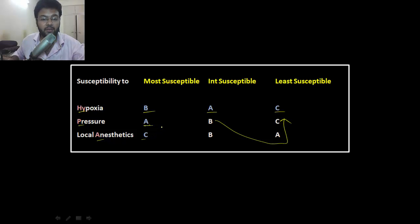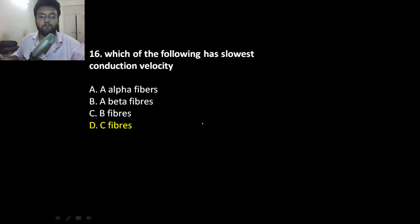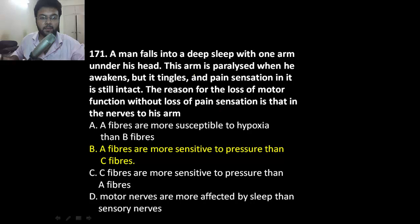Remember: hypa on the left, back on the right. Here are some direct questions. Slowest conduction velocity — C fibers, because they are unmyelinated.